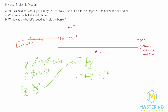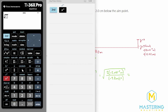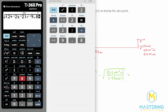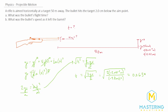Plugging in values: the square root of two times y final, which is negative 0.02 meters, divided by the acceleration in the y direction, which is gravity — negative 9.8 meters per second squared. So we have the square root of (2 × −0.02) divided by −9.8 m/s², giving us a flight time of 0.0639 seconds.